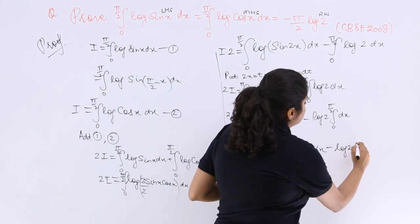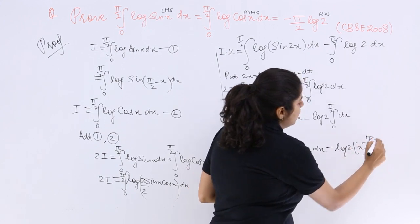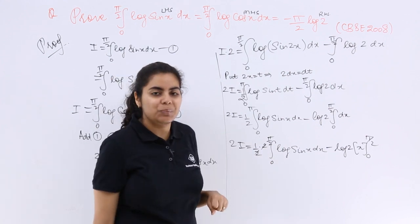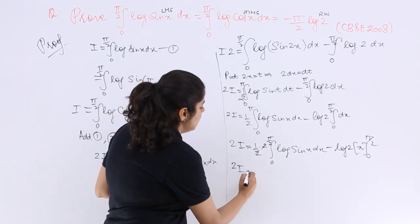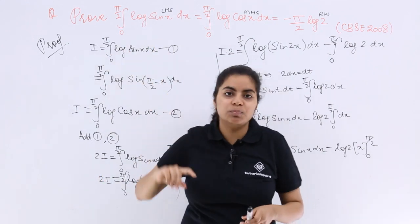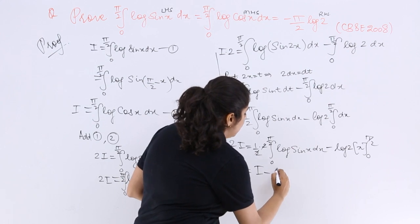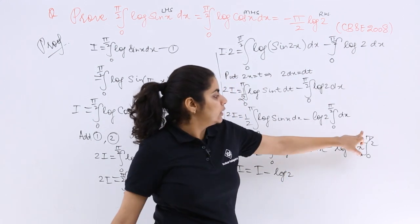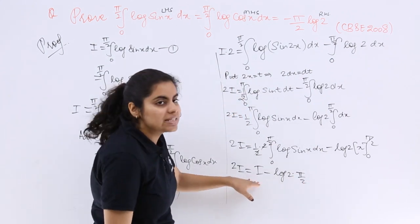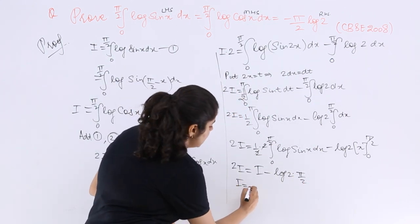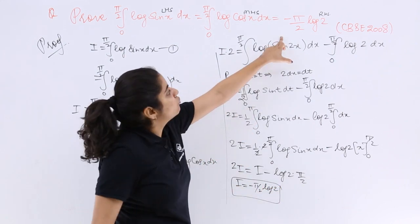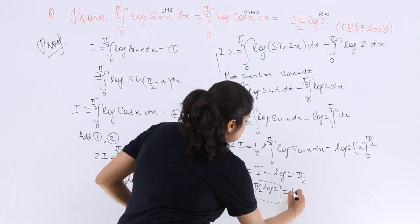Minus log 2, x is the integration 0 to π/2 goes the limits. Now 2, 2, from the numerator, the denominator gets cancelled. So 2I is equal to log sin x dx integration 0 to π/2 is the question itself which is I, minus log 2, put the limits, π/2 minus 0 is π/2. So 2I minus I is I is equal to minus π/2 log 2 and that is what we needed to prove which is the RHS.